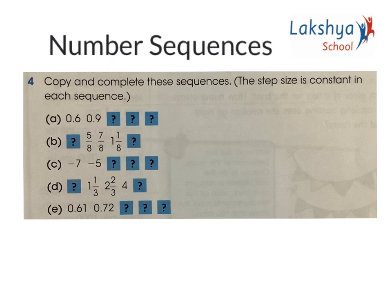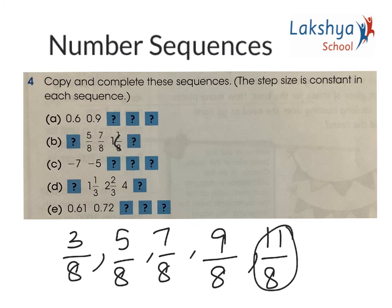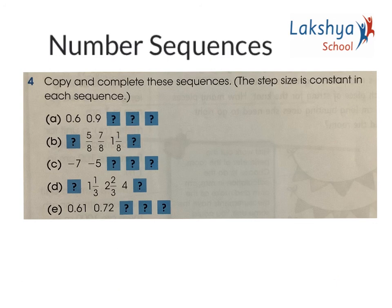Part B: 5/8, 7/8. What is the difference? 5 and 7. So every time the numerator is increased by 2. The previous number would be 3/8. So the sequence is 3/8, 5/8, 7/8. Next is 9/8, which can be written in mixed number form as 1 and 1/8. Next number is 11/8, or 1 and 3/8. Similarly, work out the remaining sums.